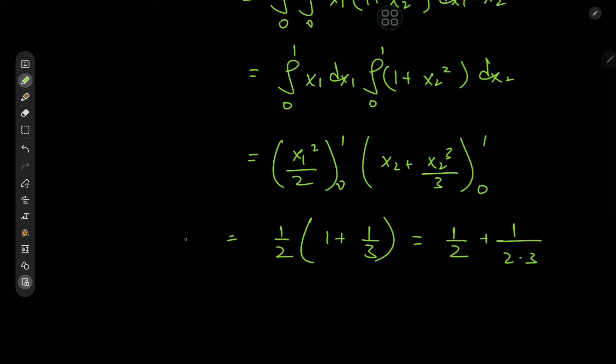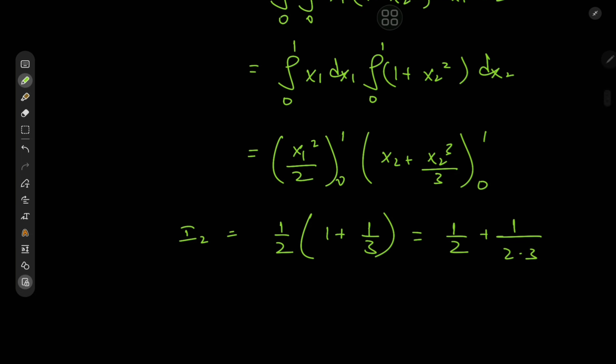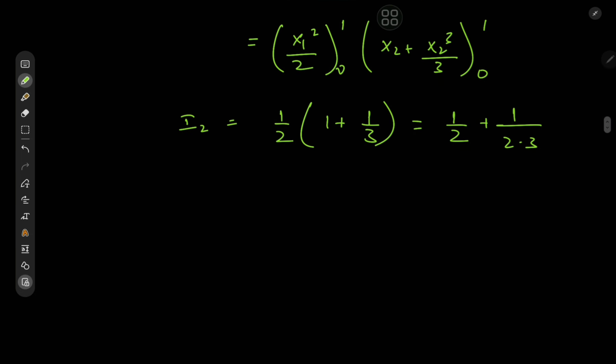But maybe forgetting basic arithmetic is for the better, because maybe that pattern comes in handy for I_3. So with I_3, that would be integral 0 to 1, integral 0 to 1, integral 0 to 1 of x1 plus x1*x2^2 plus x1*x2^2*x3^3 dx1 dx2 dx3.